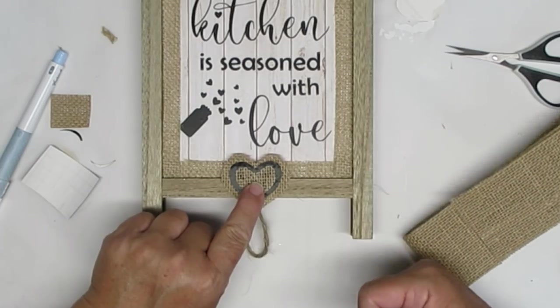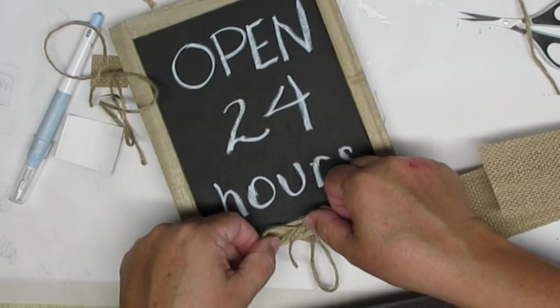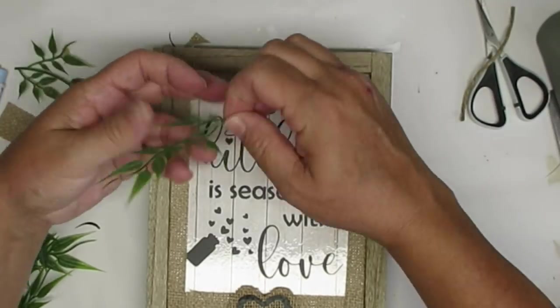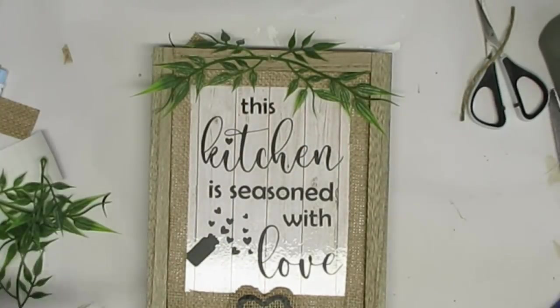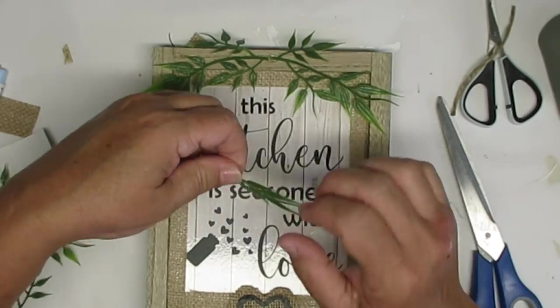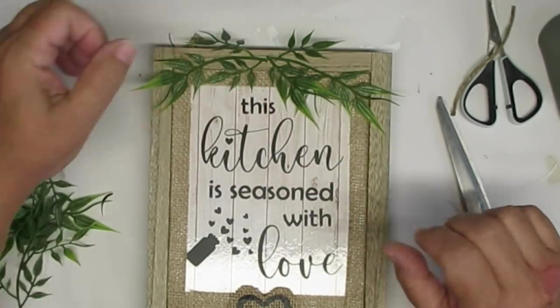For the chalkboard side I just added a simple twine shoestring bow. You could by all means leave this sign exactly the way it is. I think it's super cute but I decided to add some of these flat vine pieces that wouldn't stick out too far.